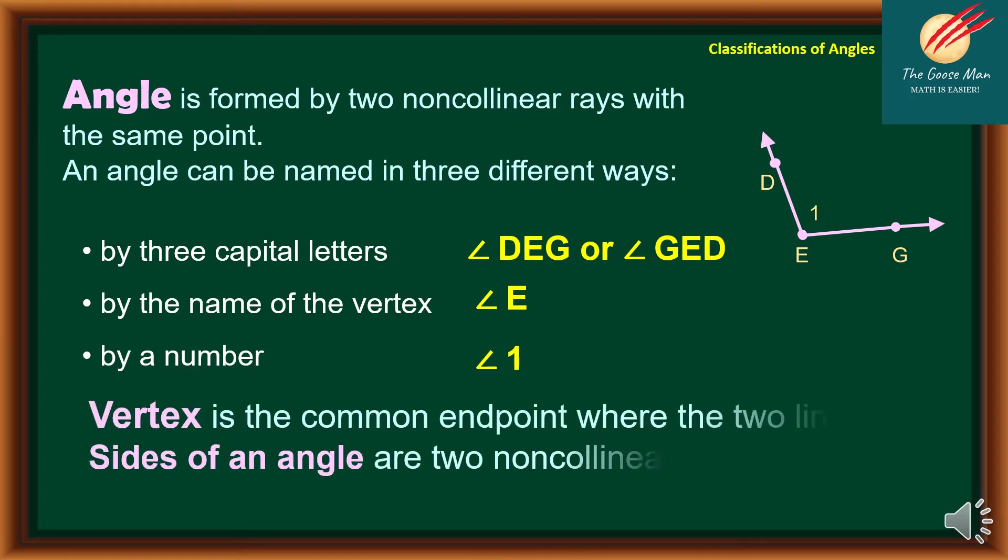Remember that the vertex is the common endpoint where the two lines meet. The sides of an angle are two non-collinear rays. In our illustration, rays ED as well as EG are the sides of the given angle.